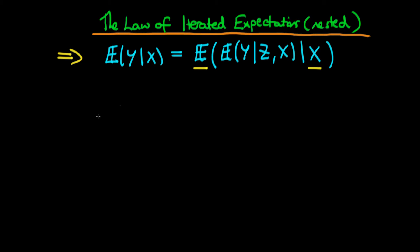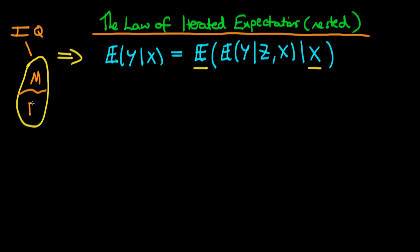So that's just it mathematically, but what does it actually mean? The idea here is that we might be interested in evaluating the average level of something within a population — for example, the level of IQ within a population. What we might do is break that population up into males and females. So a particular conditional expectation we might be interested in is: what's the average level of IQ given that an individual is female? In other words, what's the average level of IQ in the female subpopulation?